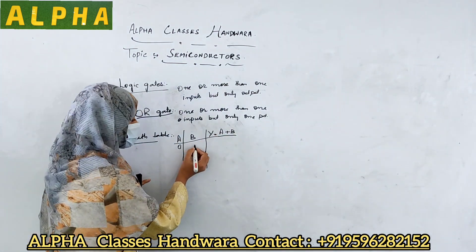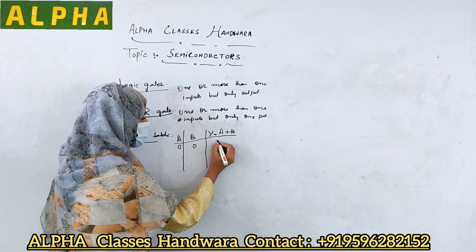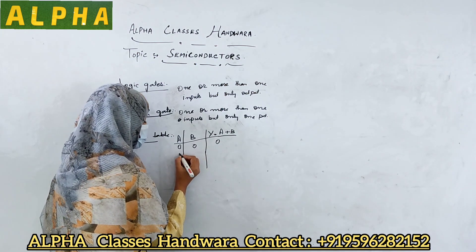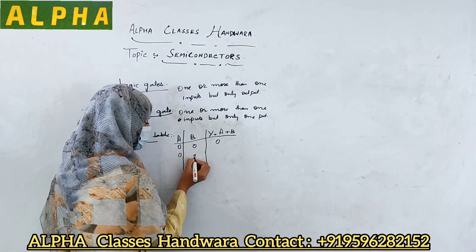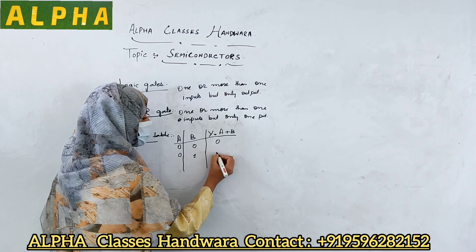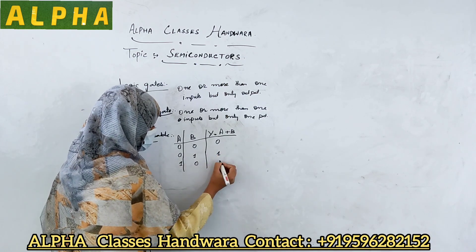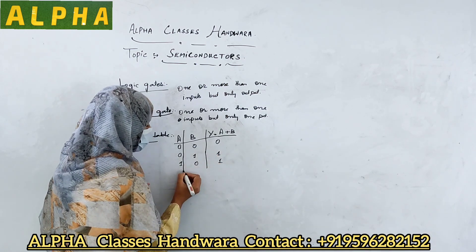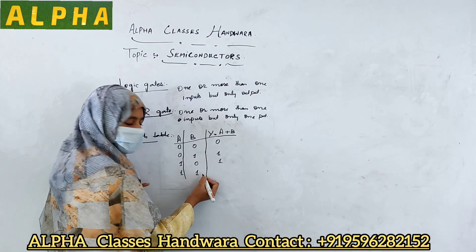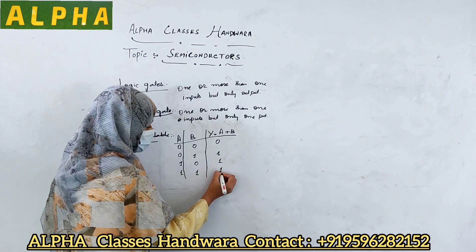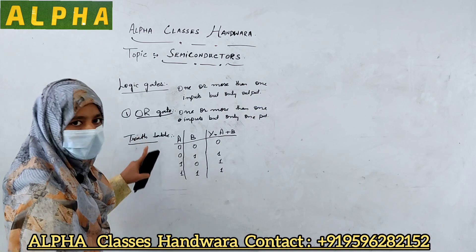If both inputs are zero, output will be low, that is zero. If one input is zero and another input is one, that is high, output will be high. If both the inputs are high, that is one, output will be high, that is one. This is the truth table for the OR gate.